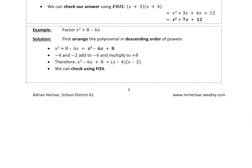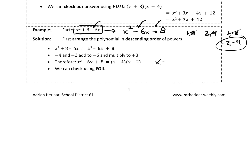Now this one is a bit of a problem because it's not in the right order, so put it in the right order: x squared minus 6x — take the sign with it — plus 8. Now we're looking for two numbers that multiply to 8 and add to negative 6. List the factors of 8: 1 times 8, 2 times 4, and then negative 1 and negative 8, and negative 2 and negative 4. Which of those add to negative 6? Negative 2 and negative 4. So it's x minus 2, x minus 4. You're done.